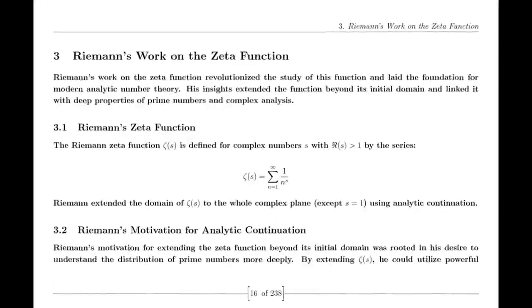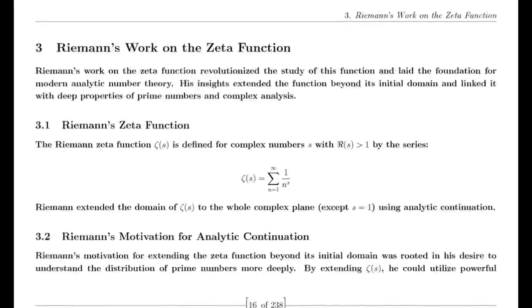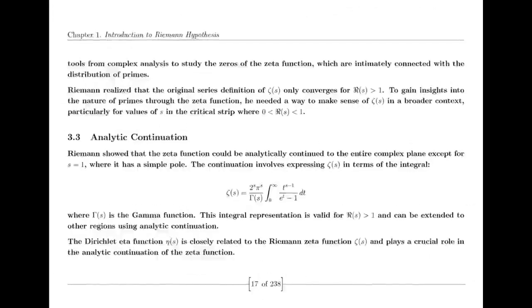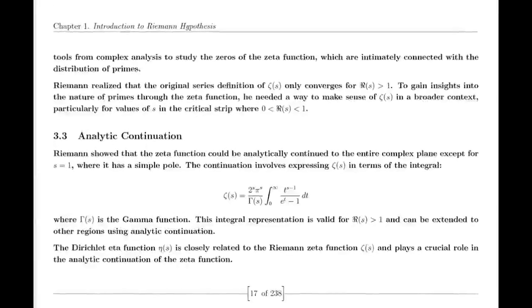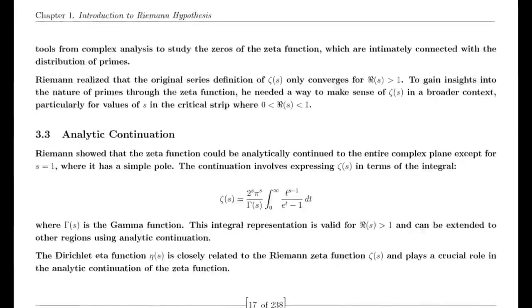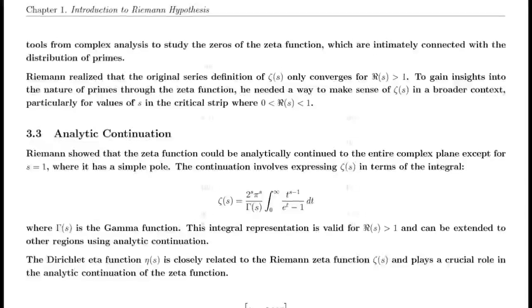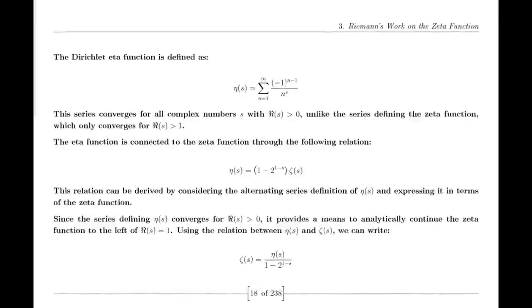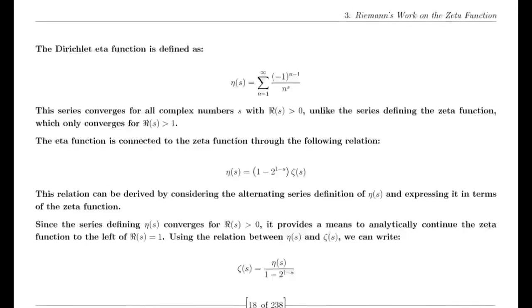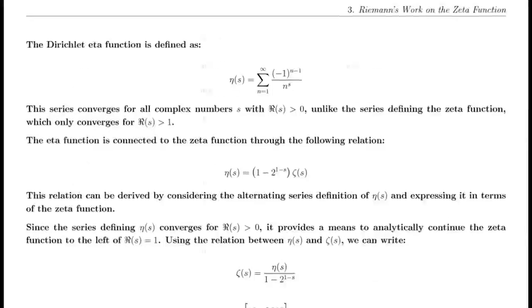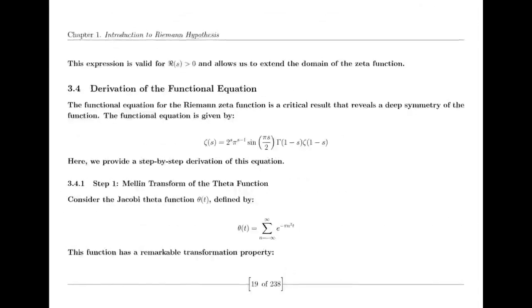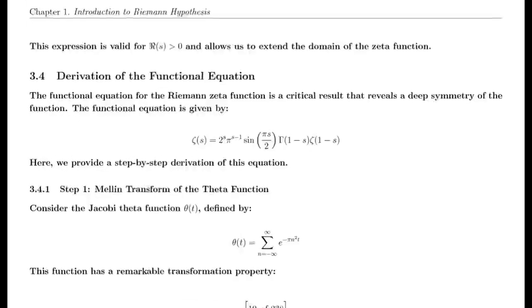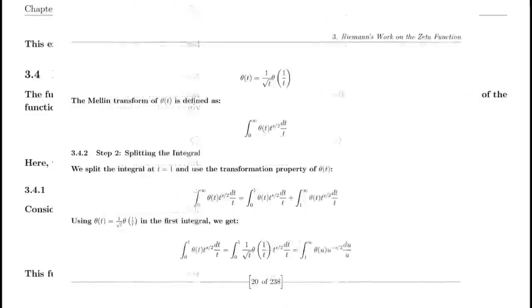Finally, we address the Riemann hypothesis itself. Riemann proposed that all non-trivial zeros of the zeta function lie on the critical line where the real part of s is one-half. This hypothesis has profound implications for number theory, particularly in understanding the distribution of prime numbers. Despite extensive numerical evidence supporting it, a formal proof or disproof remains one of the greatest challenges in mathematics.